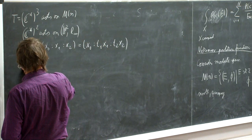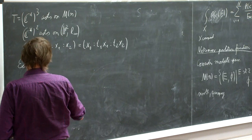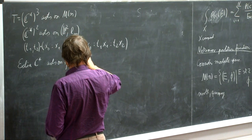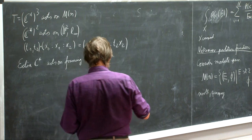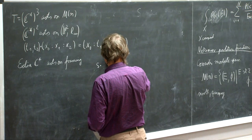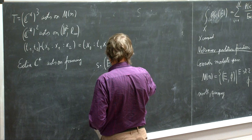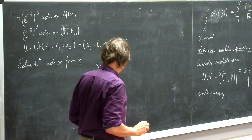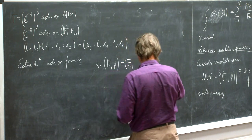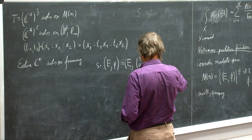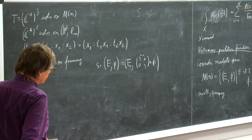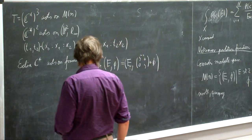And the extra C* acts on this framing. Namely, if this is the coordinate on C* and we apply it to such a pair of a bundle and the trivialization at infinity, then this is sent to the same bundle, but we change the framing — for instance, S to the minus 1, 0, 0, S composed with phi. So we just scale the fibers of the two directions of this trivial bundle in different ways.